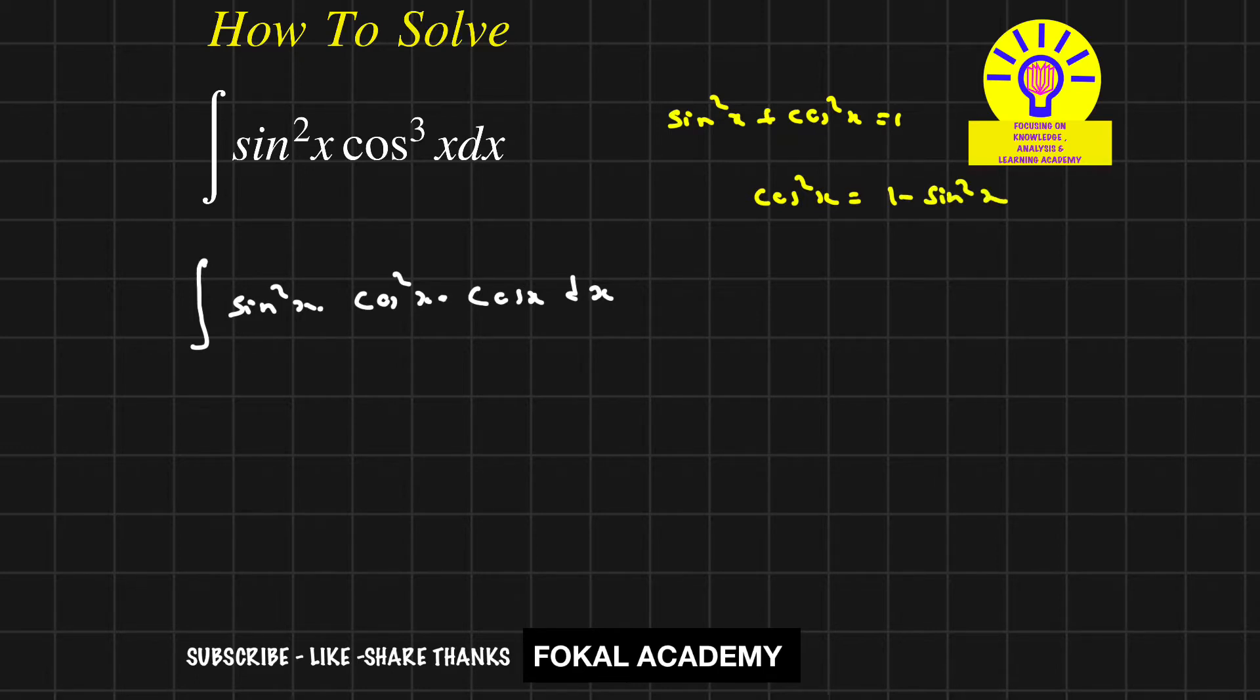Now substitute cos²x with 1 minus sin²x in this problem. Then the equation becomes integral of sin²x into (1 minus sin²x) into cos x dx.